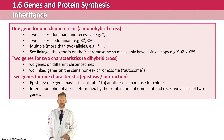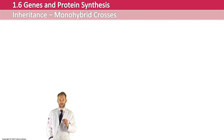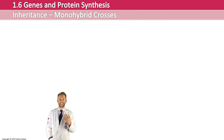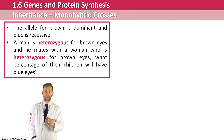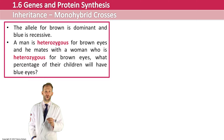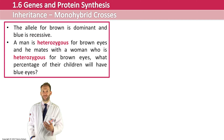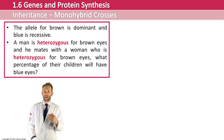Let's start with the monohybrid cross — this should be revision. This is the inheritance of a single gene. In this example, the allele for brown eyes is dominant over blue, and blue is recessive. A man who is heterozygous for brown eyes reproduces with a woman who is also heterozygous for brown eyes. What percentage of their children will have blue eyes?